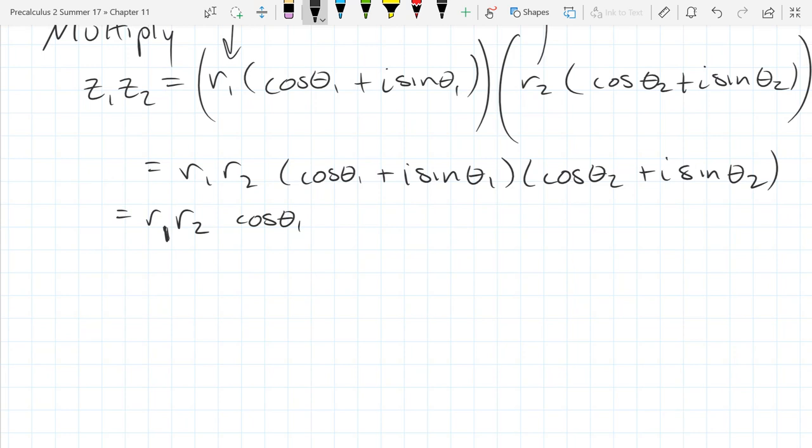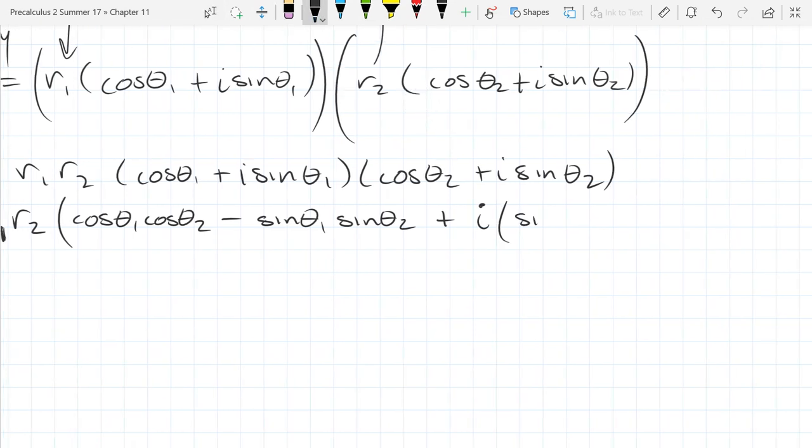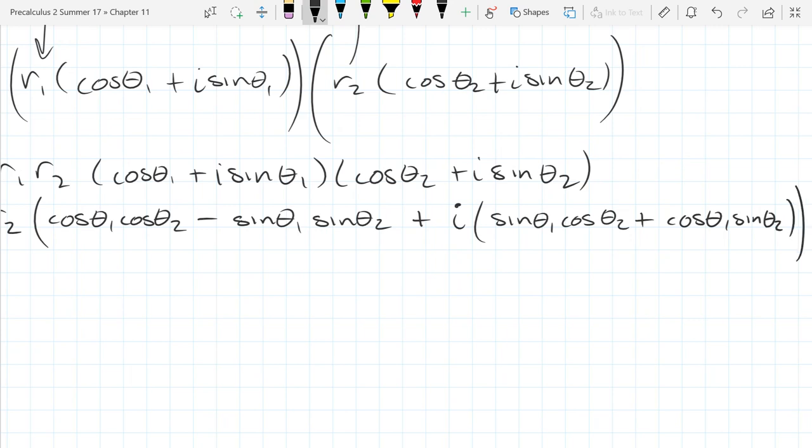So we're going to get cos θ₁ cos θ₂. Last, i squared is negative 1, so it's negative sin θ₁ sin θ₂. So we're going to the outside inside. I'm going to go inside outside. Hopefully it'll look more like where I want to be going. This is going to be i times, so we're going to have sin θ₁ cos θ₂ plus the outside. Outside is cos θ₁ sin θ₂. And again, these all had i multiplied by them, so I just took the i out right here. They each have an i.